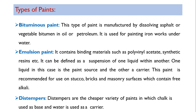Emulsion paint is used for painting various building elements — walls, wood, and metals. It contains binding materials such as polyvinyl acetate and synthetic resins. It can be defined as a suspension of one liquid within another — one liquid is the paint source and the other is a carrier. This paint is recommended for use on stucco, bricks, and masonry surfaces which contain free alkali.